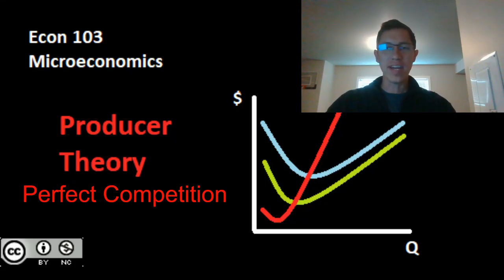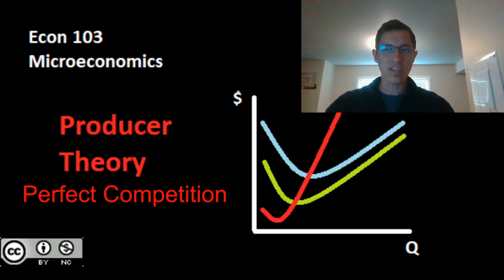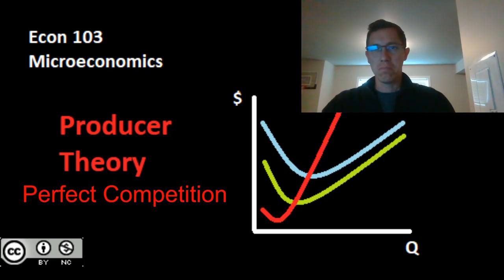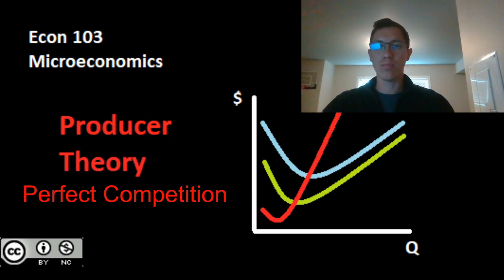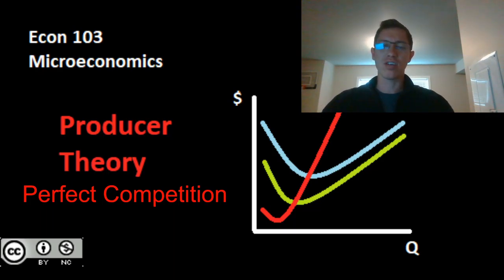So far we've been evaluating a representative firm. We've taken a look at their production function and their cost structure. However, we haven't quite gotten at our fundamental assumption as to why firms even exist, and that is profit maximization. We have not yet looked at how a firm profit maximizes, how they determine their optimal quantity that they're going to produce, and at what price. We've just looked at these generic costs and production functions.